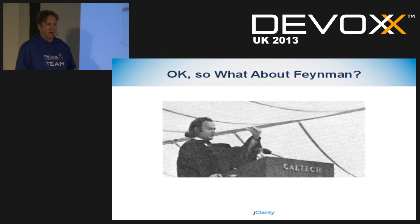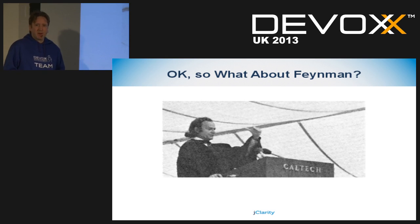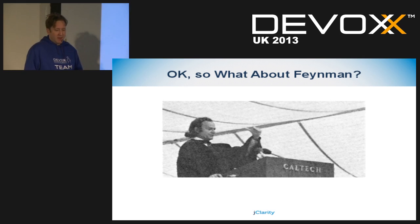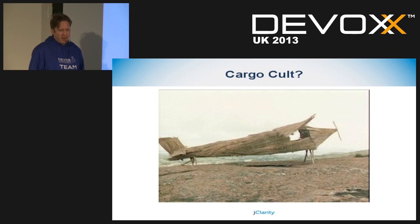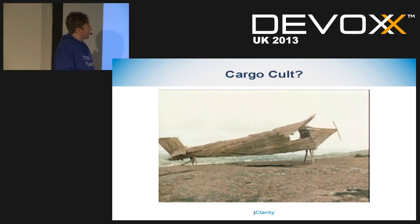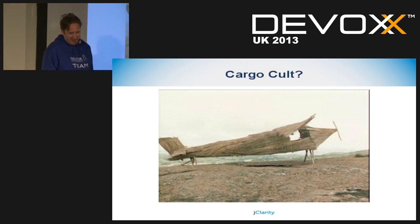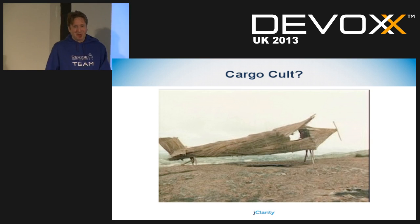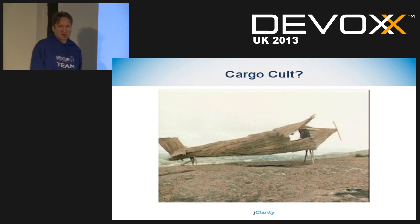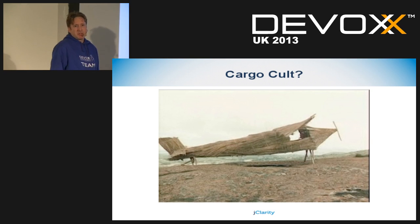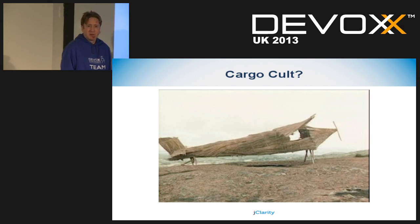Then the war ends and the planes stop coming — no more cool stuff. The people living on the island started to develop ways they thought would make the planes come back. They built towers and things like this bamboo airplane — because obviously if you have a landing strip, what you need are airplanes, so if you don't have any, you build one. This is an output which is superficially similar to what you wanted, but fails in pretty much every important way to actually be what was required.